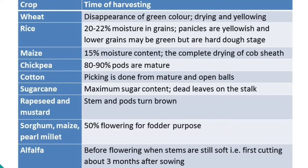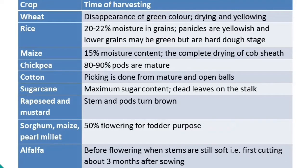Some of the common symptoms for harvest maturity are: in wheat, the disappearance of green color; in rice, grain moisture content of 20% to 22%; in maize, grain moisture content of 15% and complete drying of the cob sheath; in sugarcane, drying of the lower leaves; in chickpea, when 80% to 90% of pods are mature; in rapeseed, when the stem and pods turn brown; and in sorghum, maize, and pearl millet grown for fodder purpose, at 50% flowering the crop is harvested.